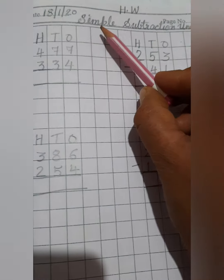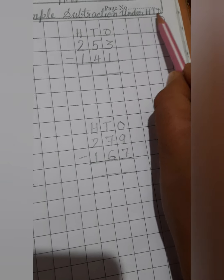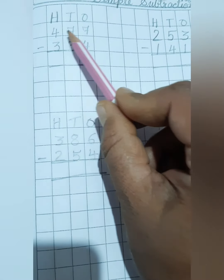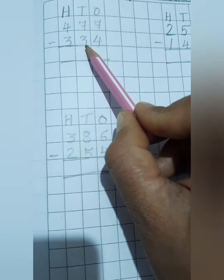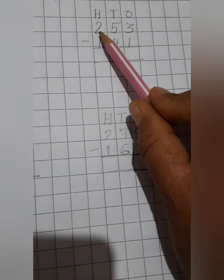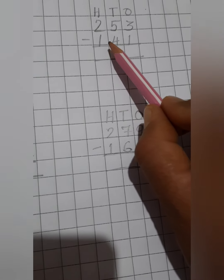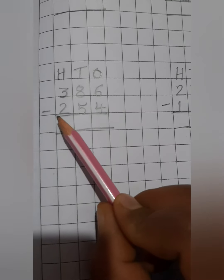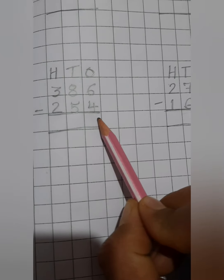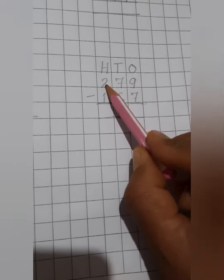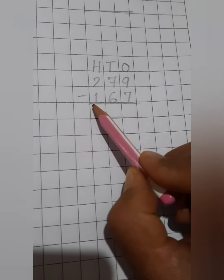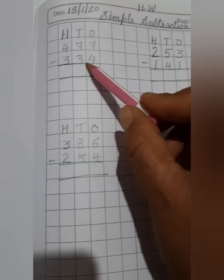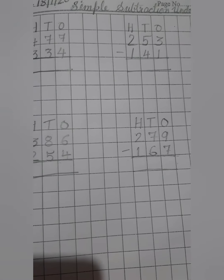Now children, these 4 sums are your homework under H T O. First: 477 minus 334. Then: 253 minus 141. Then: 386 minus 254. And the last one: 279 minus 167. All these 4 sums are your homework, which you all have to do by yourself.